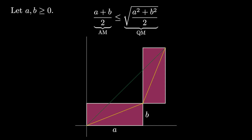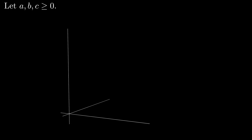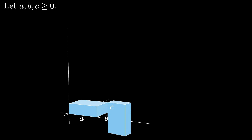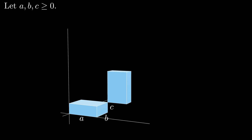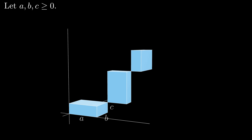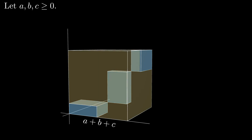Now with the two-variable case in hand, let's see David Trebe's wonderful extension to three variables. Here we start with a, b, and c, all non-negative real numbers. Then we place an a by b by c rectangular prism with one corner at the origin in three-space like this. Now take a second copy, rotate it, and shift it. And then take a third copy, rotate it, and shift it like this as well. As shown, these three rectangular prisms fit perfectly in a cube with a side length of a plus b plus c.